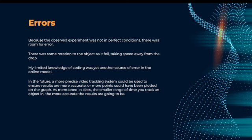Errors. Because the observed experiment was not performed in perfect conditions, there was definitely room for error. There was also some rotation of the object as it fell, which took the linear speed away from it. And my limited knowledge of coding was yet another source of error in the computer models because I could have had more accurate code if I had more knowledge and went more into depth in the actual coding part.